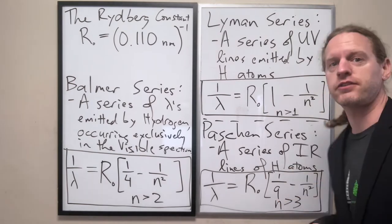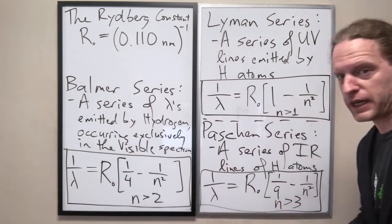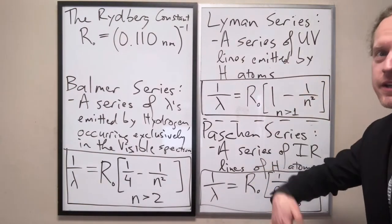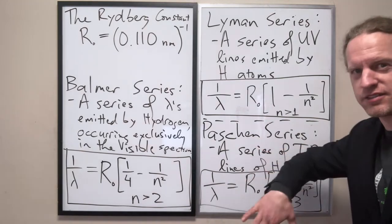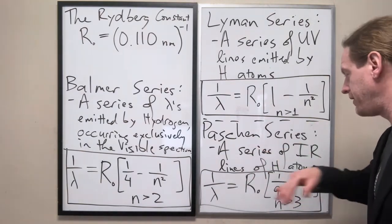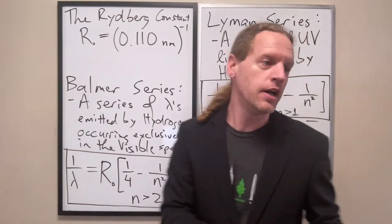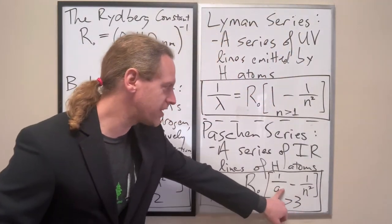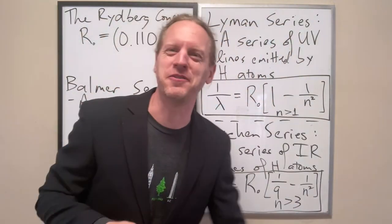If you set this thing to 1 third squared, you get exclusively infrared wavelengths. And you can probably guess what the change will be for the bracket series, the next one down the line. To produce the wavelengths for the bracket series you just change that one ninth, and I'll let you figure that one out but it's not too tough.